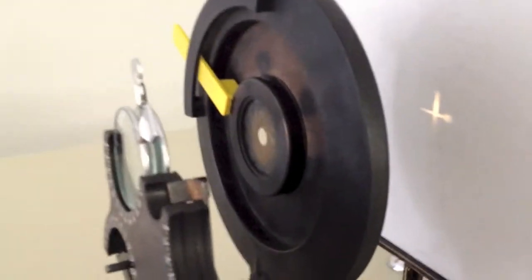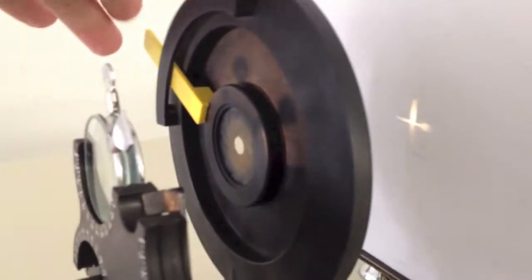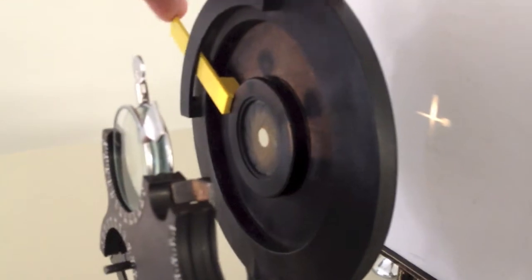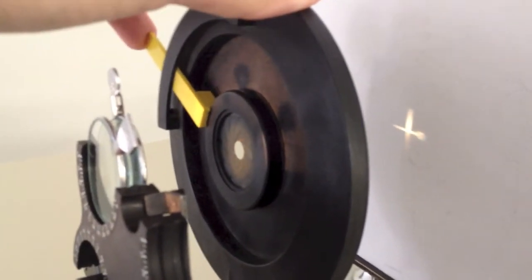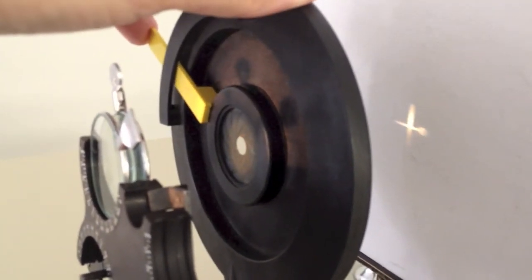So part of this lab is to examine what happens to how clear your image is going to be if you change the size of your pupil. How does that affect the clarity of your vision?